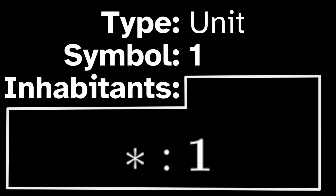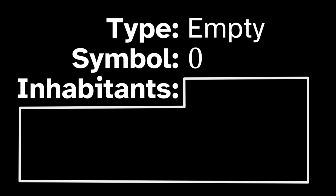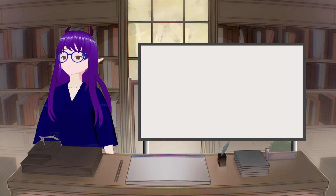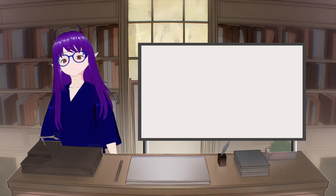Let's introduce a few simple types. The unit type, written as a bold number one, is defined to be inhabited by the single object 'point' — by definition this is the only object within this type. Another useful type is the empty type, which is defined as being uninhabited; in other words, there is no entity with this type.